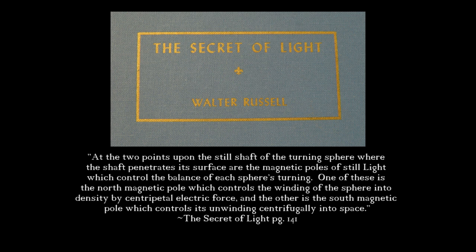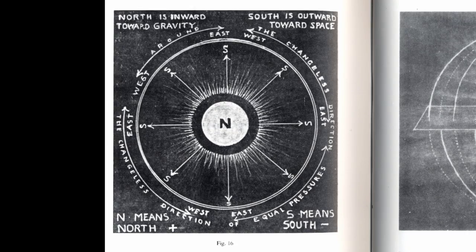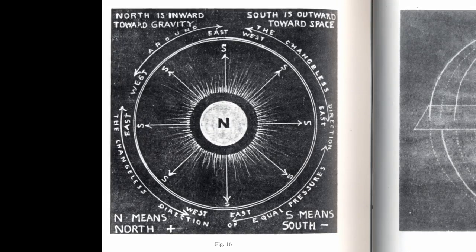Which control the balance of each sphere's turning. One of these is the north magnetic pole, which controls the winding of the sphere into density by centripetal electric force. And the other is the south magnetic pole, which controls its unwinding centrifugally into space. This is a conceptual error which is opposed to the Russell's work.